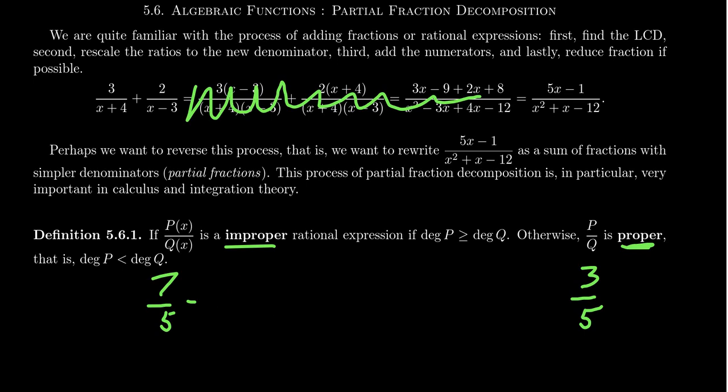The same thing can be done for rational functions as well. So we say that the rational expression P(x) over Q(x) is improper if the numerator has a degree greater than or equal to the denominator's degree. So when we say that the top is bigger than the bottom, we're talking about the degree of the polynomial. If the top has a smaller degree than the denominator, then we say it's a proper fraction.